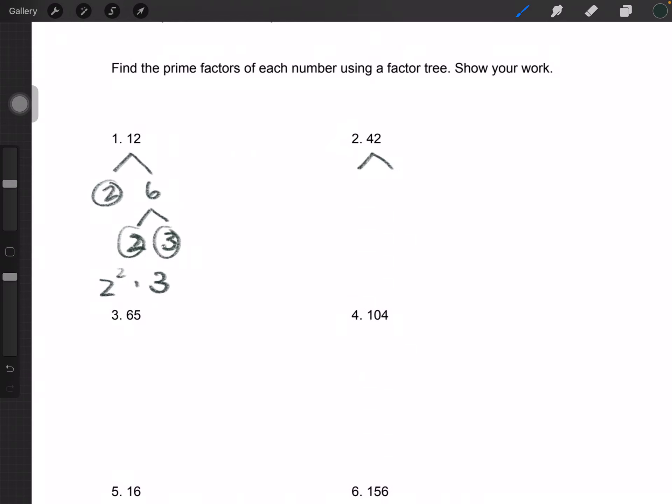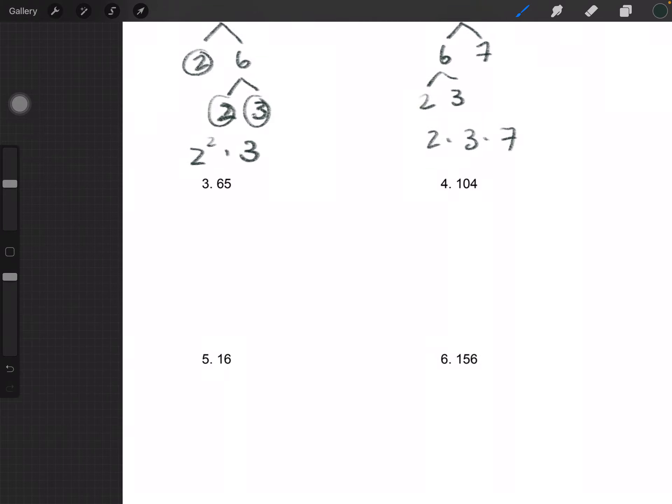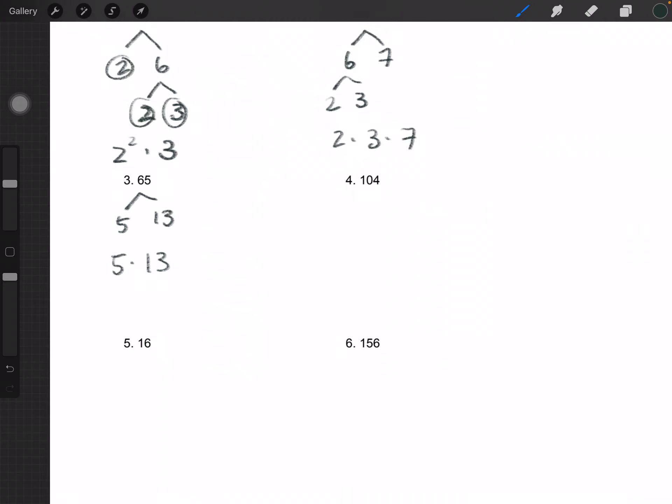For 42, we have 6 and 7, which breaks down to 2 and 3, so your prime factorization is 2 × 3 × 7. For 65, you have 5 and 13, and that would be your prime factors. And 104 would be 2 and 52, which gives you 2 and 26, then 2 and 13, so this would be 2 to the third times 13.